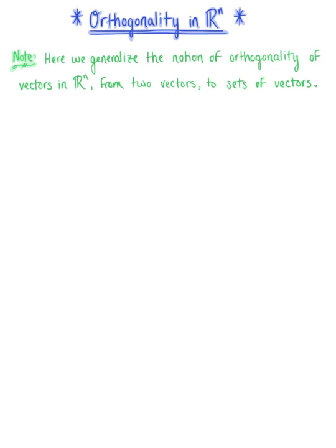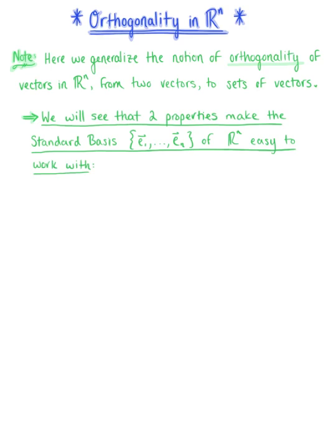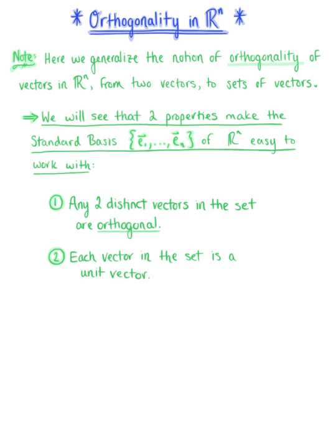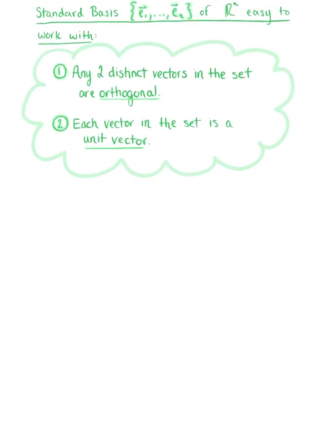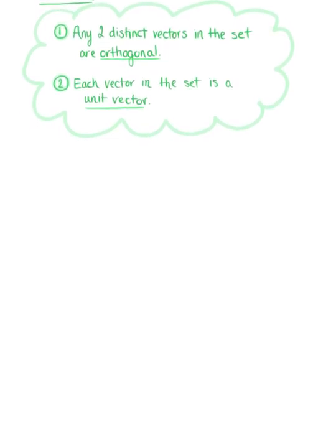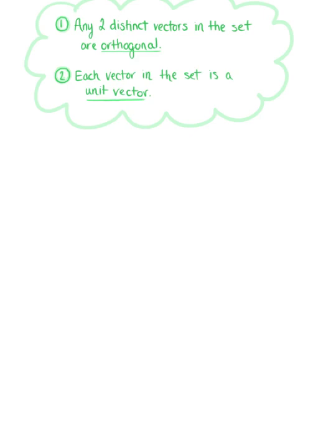Orthogonality in Rn. In this section, we generalize the notion of orthogonality of vectors in Rn from two vectors to sets of vectors. In doing this, we will see that two properties make the standard basis of Rn easy to work with. The first property is that any two distinct vectors in the set are orthogonal. The second property is that each vector in the set is a unit vector, or a vector of length one. These two properties lead us to the notion of an orthogonal basis as well as an orthonormal basis, which are two concepts we will continue to use frequently throughout our linear algebra journey.